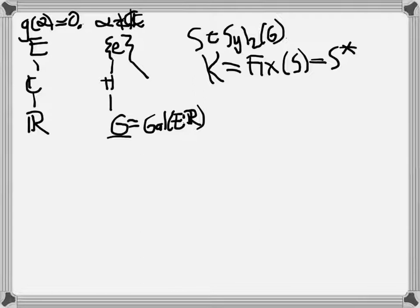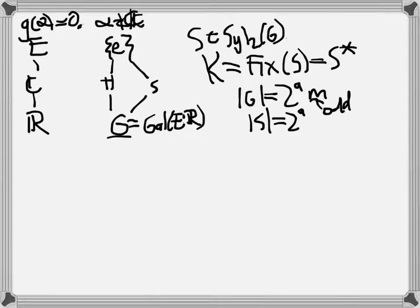So what do we have here? If the order of G is 2^a · m, where m is odd, it means that the order of S equals 2^a. You need to use Sylow theory to get this. Lagrange's theorem says that if you have a subgroup, then the order of the subgroup divides the order of the group. The main Sylow theorem is a partial converse: if a prime power divides the order of G — and 2^a does — then you get a subgroup of that order. So that's what I'm using here. It's a partial converse of Lagrange's theorem, so I'm guaranteed that such an S exists. That means in my group I have S here, and by the Galois correspondence that's going to match up with K.